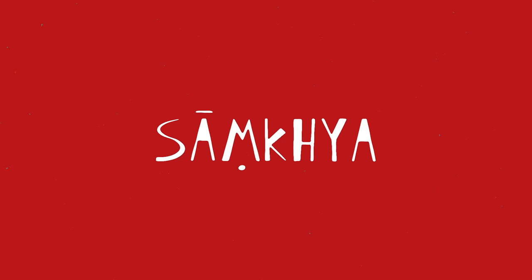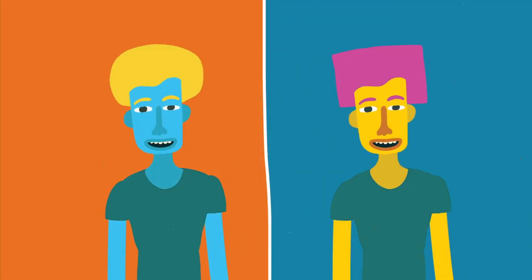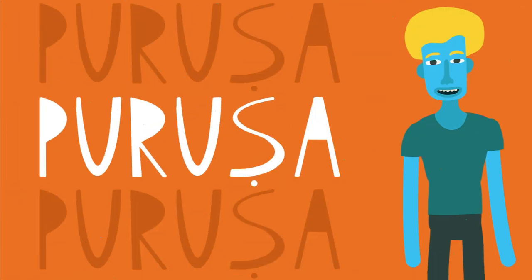Sankhya is an Indian philosophical school that is considered dualistic, positing the existence of two fundamental principles, or what are called tattvas: purusha and prakriti.